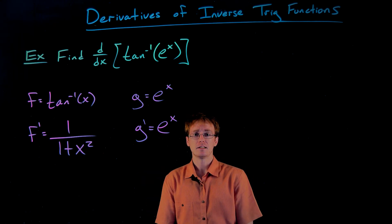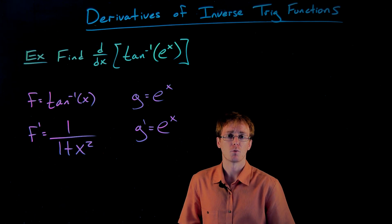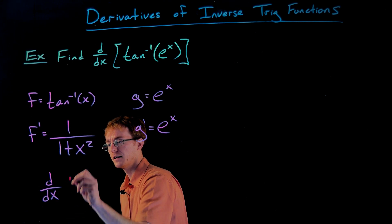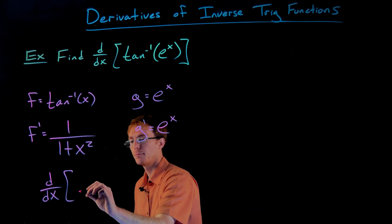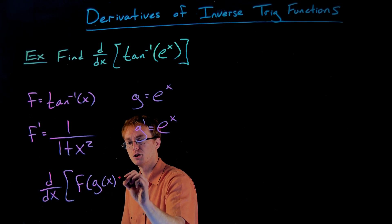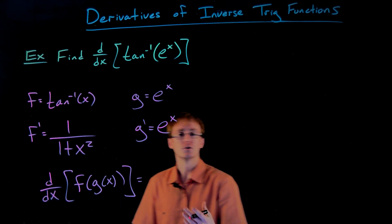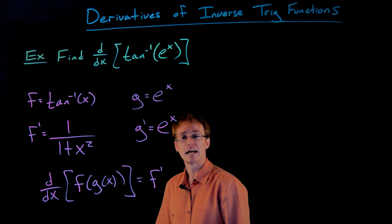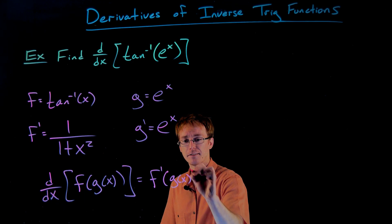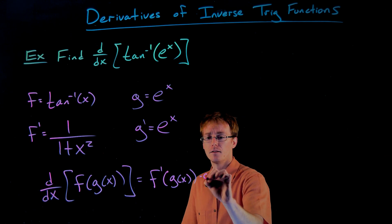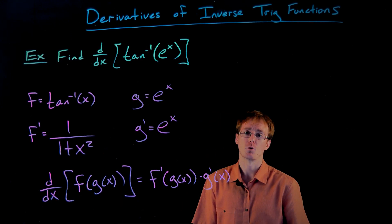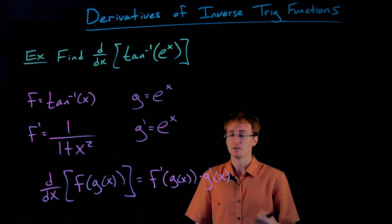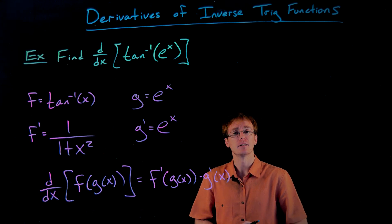And the derivative of e to the x — which we found in an earlier video — is that really special function that is equal to its own derivative. So now we have the four pieces we need to use our chain rule. Let's remind ourselves of the chain rule formula. The chain rule says if you want to differentiate a composition of two functions, f of g of x, you write the derivative of the outer function evaluated at the inner function, multiplied by the derivative of the inner function.